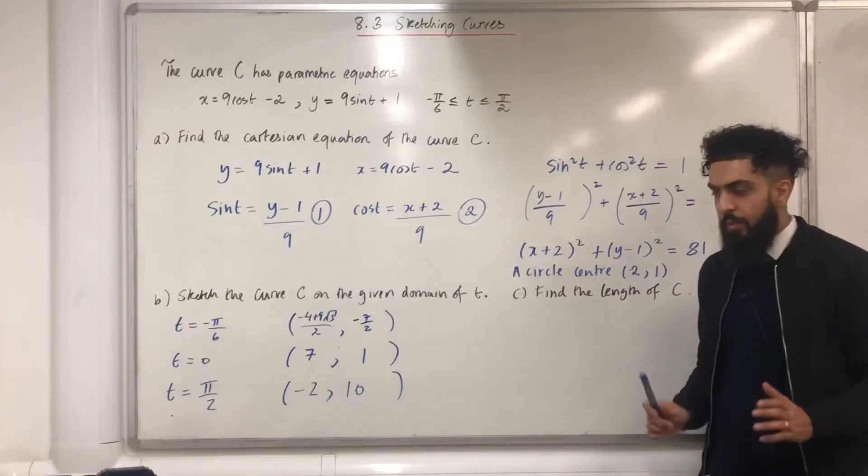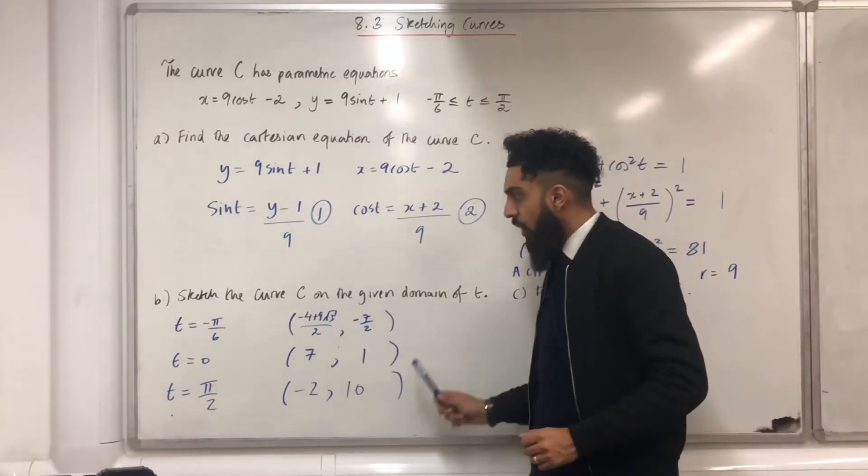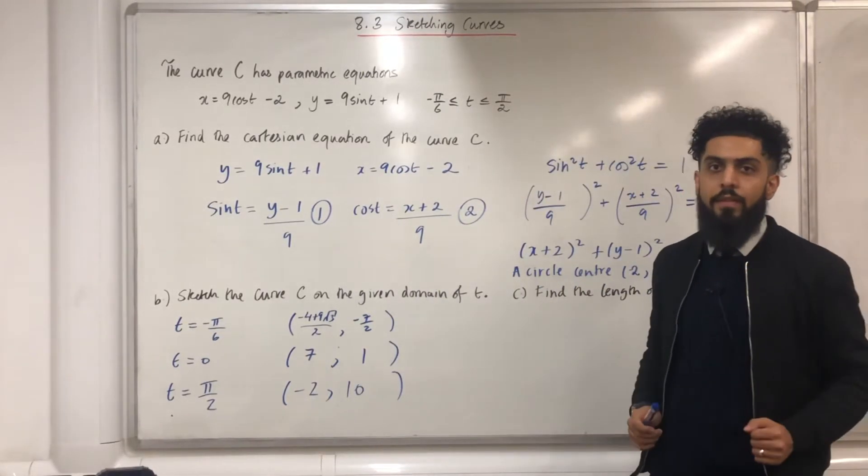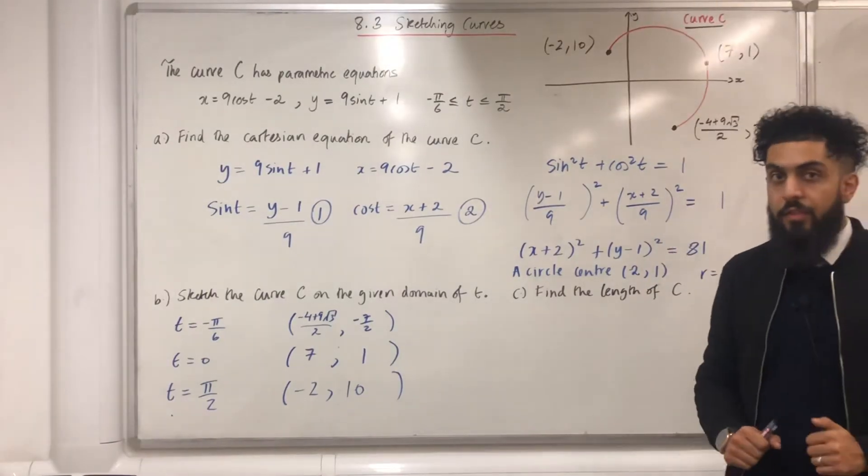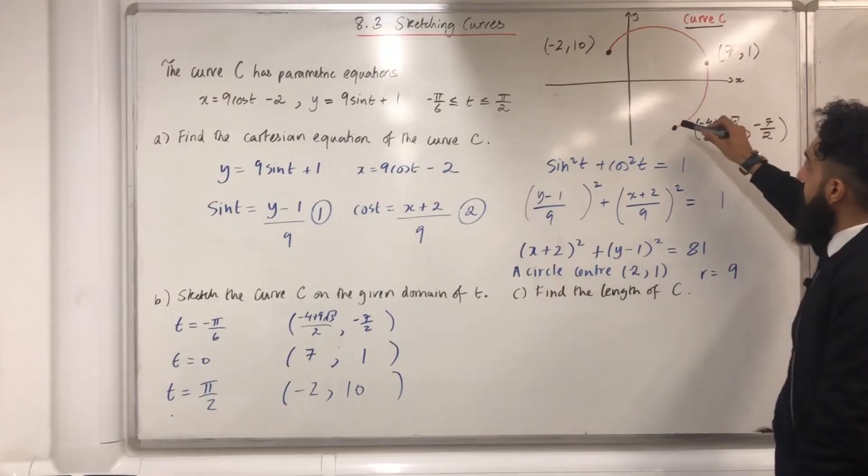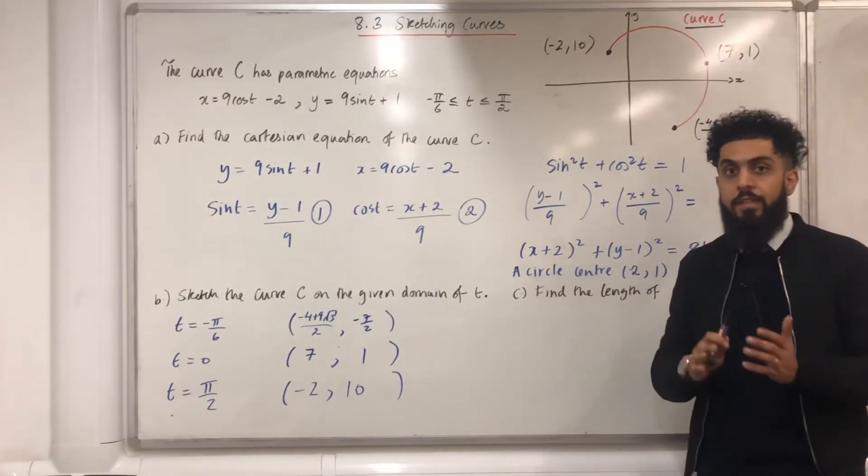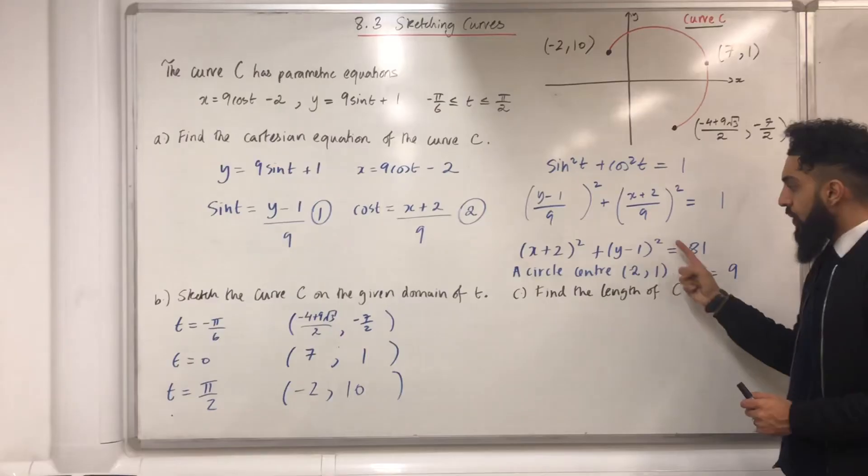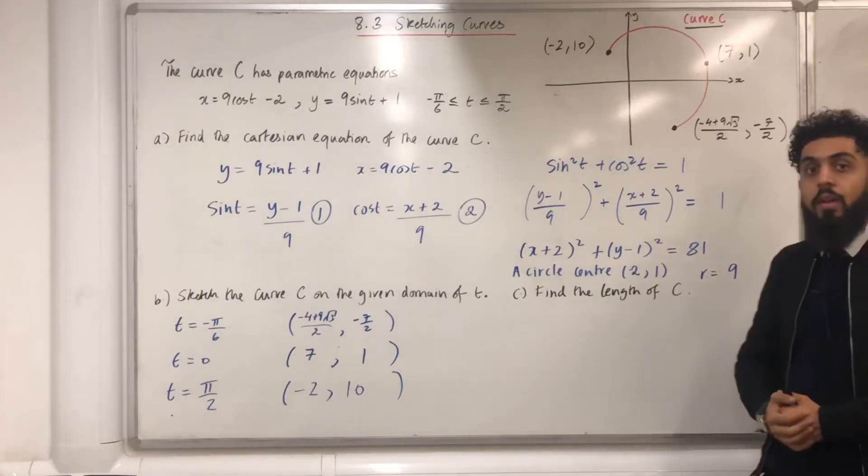Okay, ladies and gents, my next step is to plot these three points on a coordinate grid and sketch the curve C. After plotting my three points on a coordinate grid, my curve C looks something like that. But the curve C just represents an arc of a circle, centre at minus 2, 1, radius equal 9.